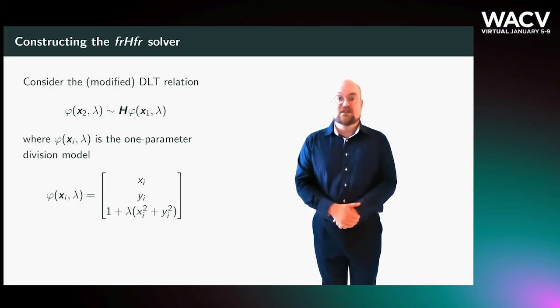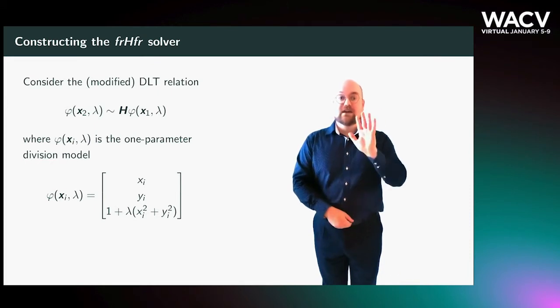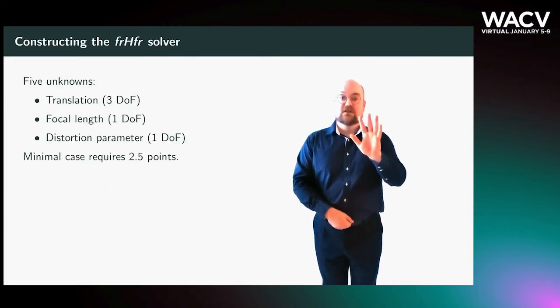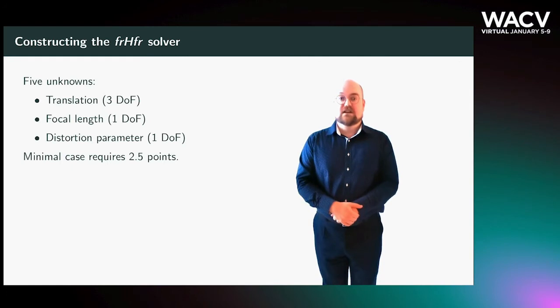For the case of equal and unknown radial distortion profile and focal length, we have five unknowns: the translation vector, the focal length, and the distortion parameter. As every DLT constraint yields two equations, the minimal case consists of 2.5 points. We use a clever strategy to eliminate one of the translation parameters from the system of equations that arises, and all the details are available in the paper.